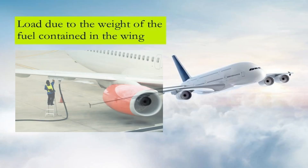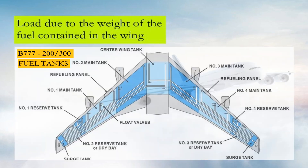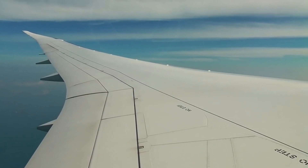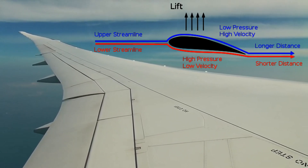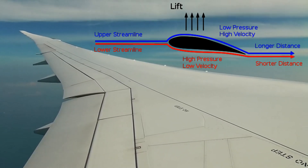The third primary load acting on the aircraft wing is the load due to the weight of fuel contained in the wing. The fuel keeps the aircraft's center of gravity more or less in the needed position. Fuel acts as a counter-stress for the wings shortly after takeoff when the stress of the aircraft mass acts on them — during takeoff it is always the largest. A wing is primarily designed to counteract the weight force produced by the aircraft as a consequence of its mass.